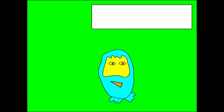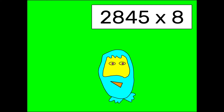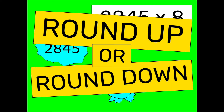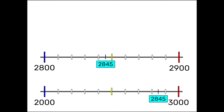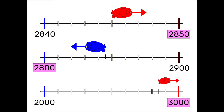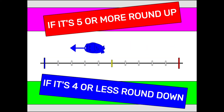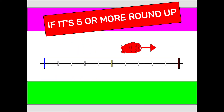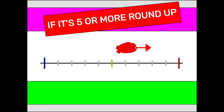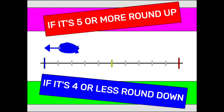When you approximate calculations, when you estimate calculations, make those numbers easier to remember. Round up or round down to the nearest thousand, hundred, ten. Just round, round, round, round. If it's five or more, round up. If it's four or less, round down.